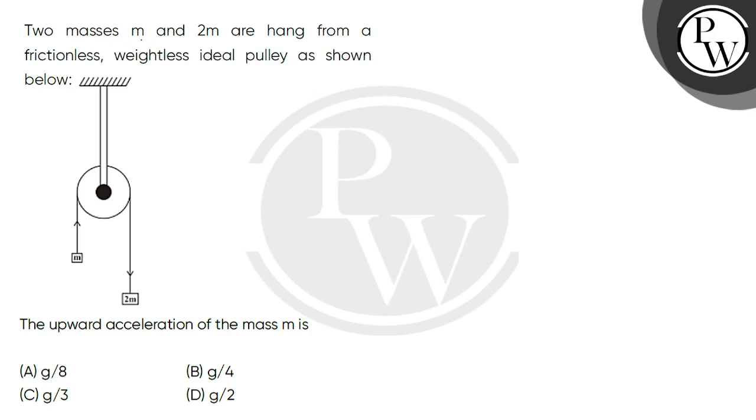It's a question. Two masses M and twice M are hanged from a frictionless weightless ideal pulley as shown below. The upward acceleration of the mass M is.